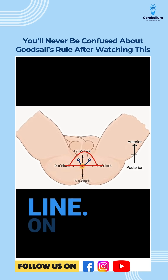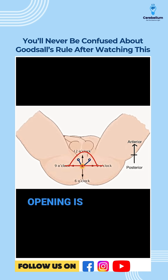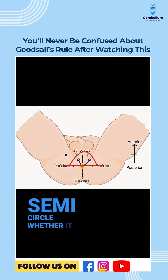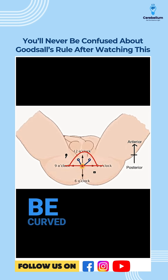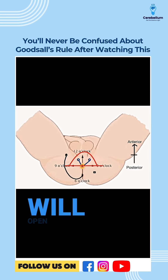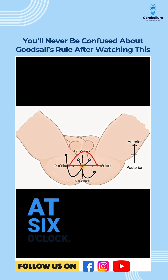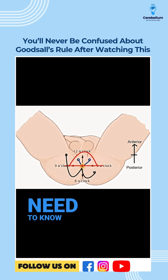On the other hand, if the opening is anywhere outside the semicircle, whether it is anterior or posterior, these tracts will be curved and all of these tracts will open posteriorly in midline at 6 o'clock. That's all you need to know about Goodsall's rule.